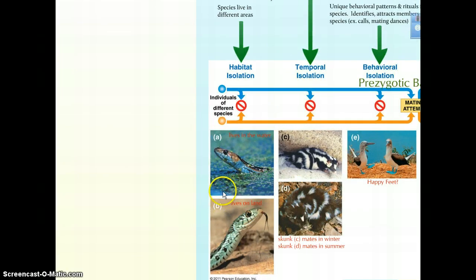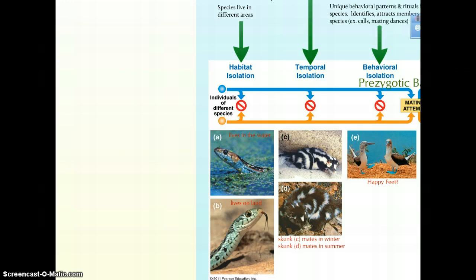Obviously, organisms that could potentially interbreed may live in different habitats, and as a result, gene flow is reduced or potentially stopped entirely.